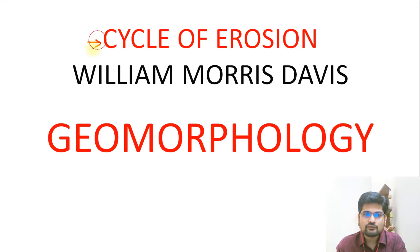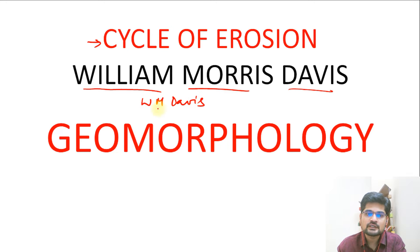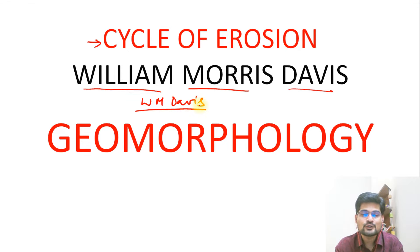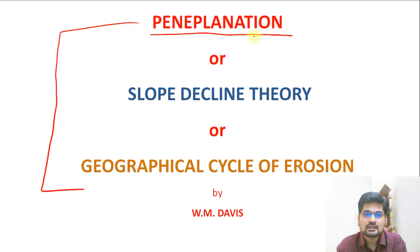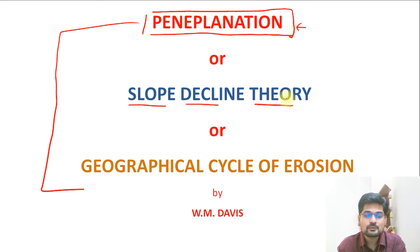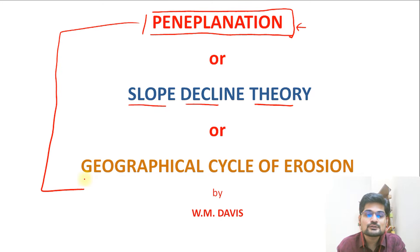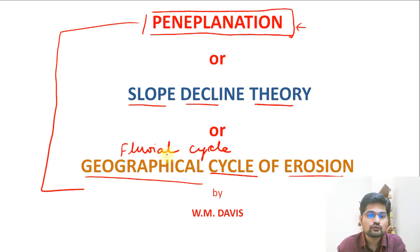Let's learn about the cycle of erosion given by William Morris Davis, W.M. Davis, which is one of the core components of geomorphology, especially when we learn about the theory of landform development and slope development. This theory has several names: it is also known as pennyplanation, the theory of pennyplanation, that is making of penny planes. The second name is the slope decline theory. It is also known as geographical cycle of erosion, or many times people refer to it as the fluvial cycle.